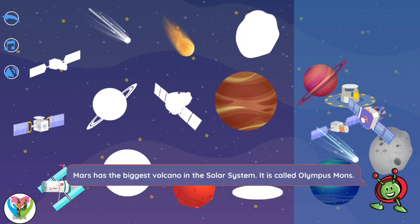Mars has the biggest volcano in the solar system. It is called Olympus Mons.